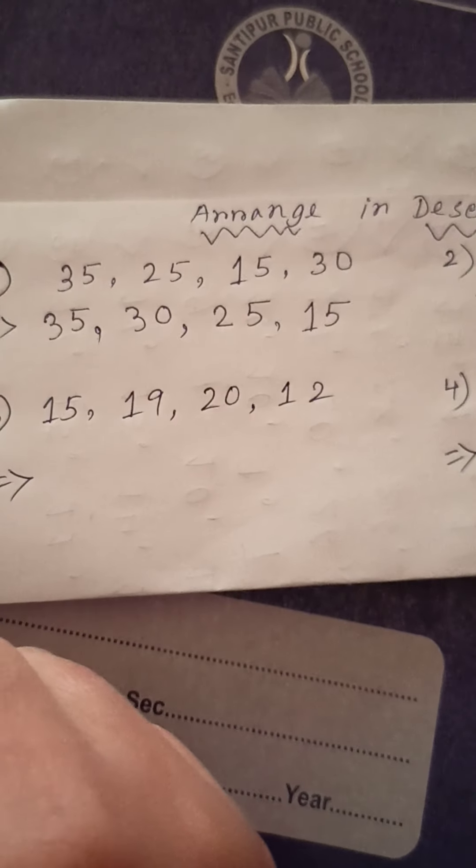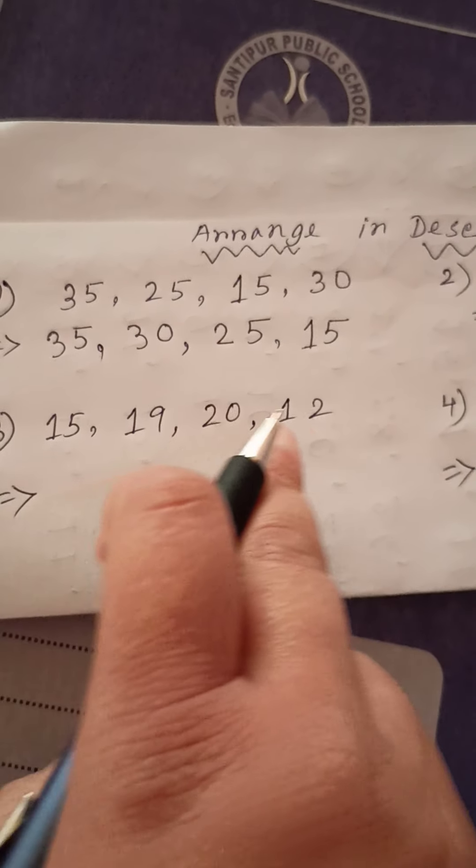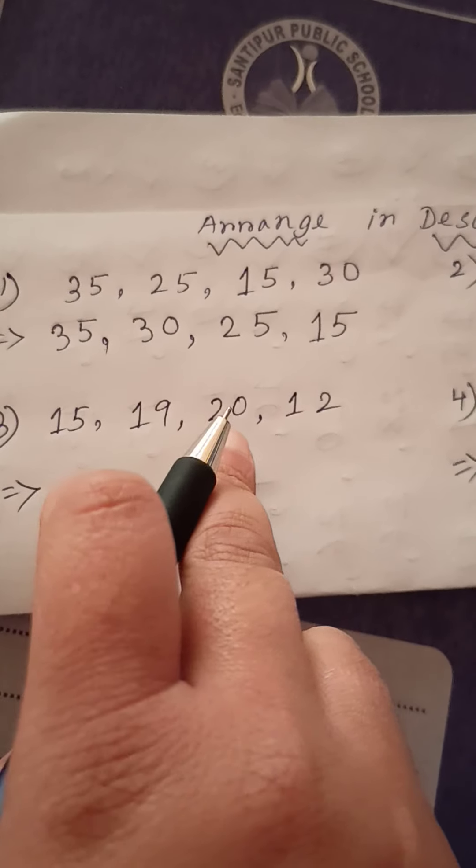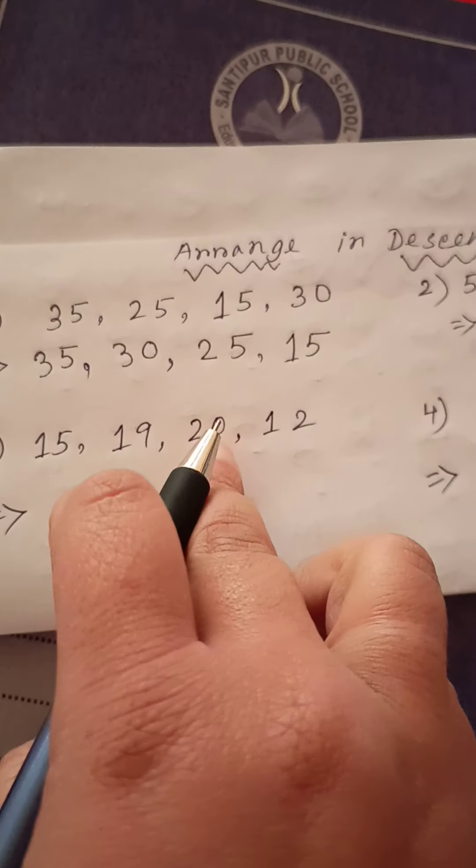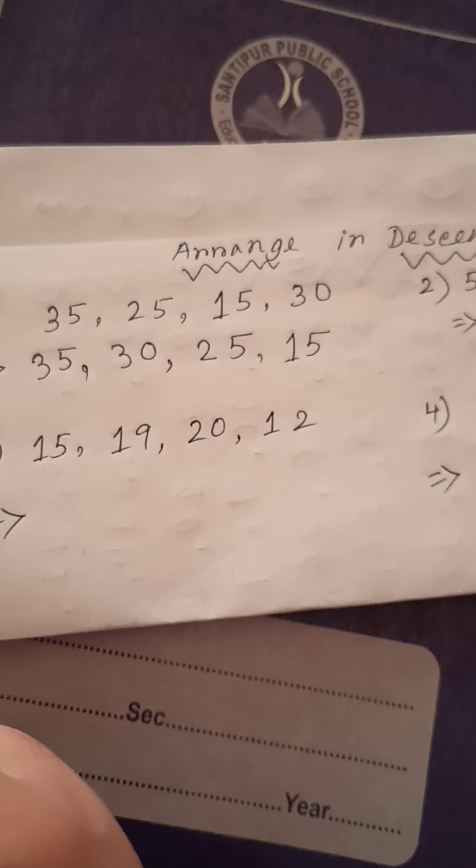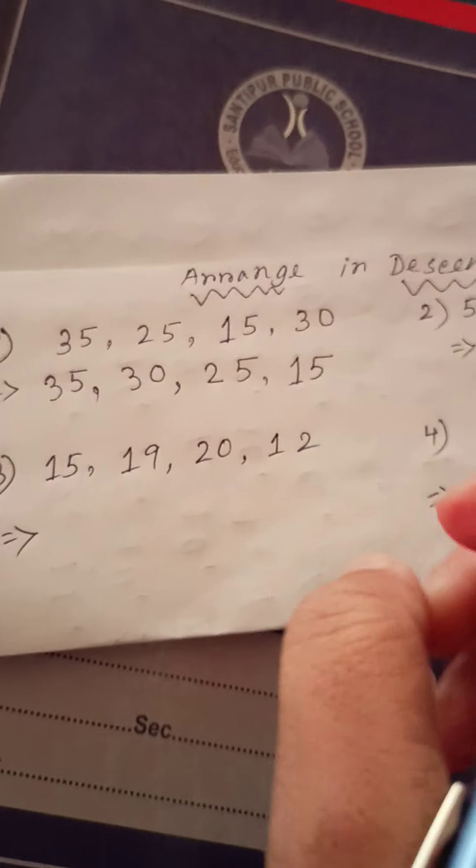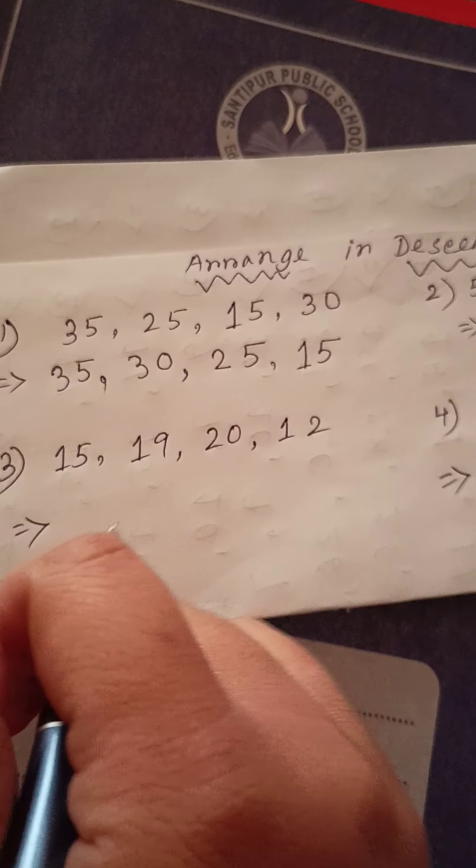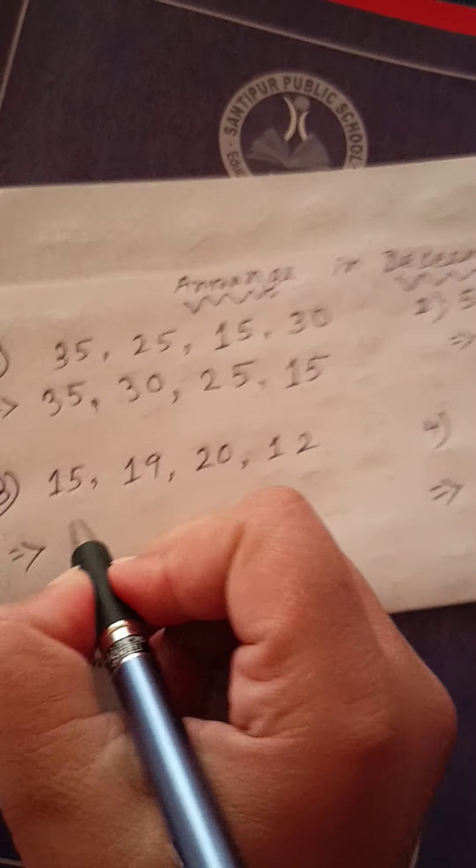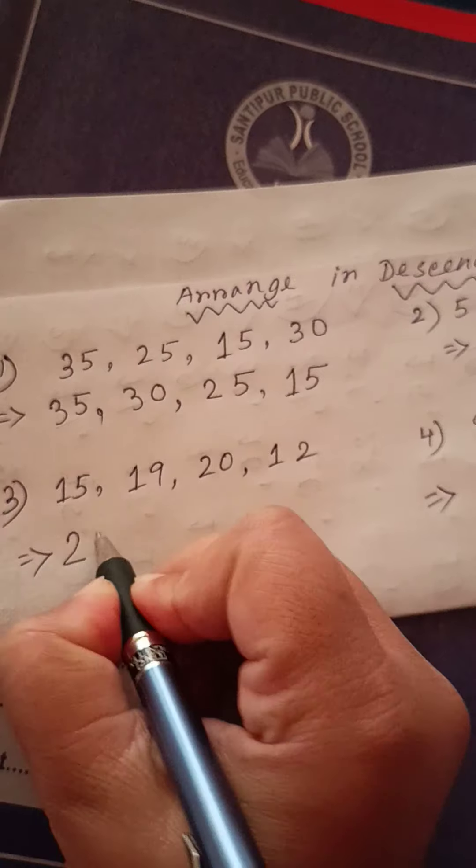Here is four number. These numbers then descending order. 15, 19, 20, 12. So, remember children. Biggest number always will come the first. Okay. So, 20 is the biggest number. Yes. Good.